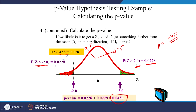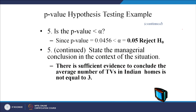This 0.0456 is the p-value. Compare this with the alpha value of 0.05. Is p-value less than alpha? Yes — 0.0456 is less than 0.05 — so we reject the null hypothesis. The null hypothesis was that the average number of TV sets in Indian homes is equal to 3. There is sufficient evidence to conclude that the number of TV sets is not equal to 3 — and since our sample mean is less than 3, it is less than 3.